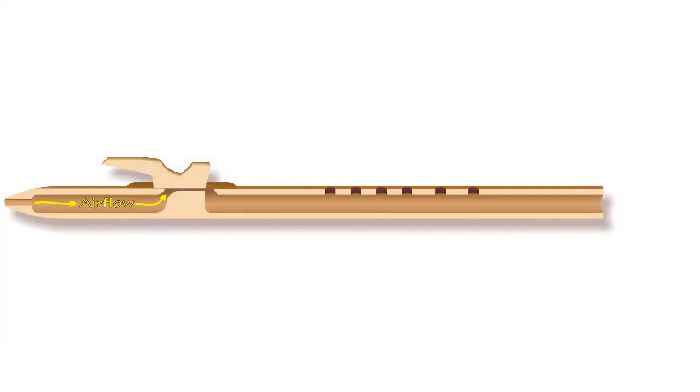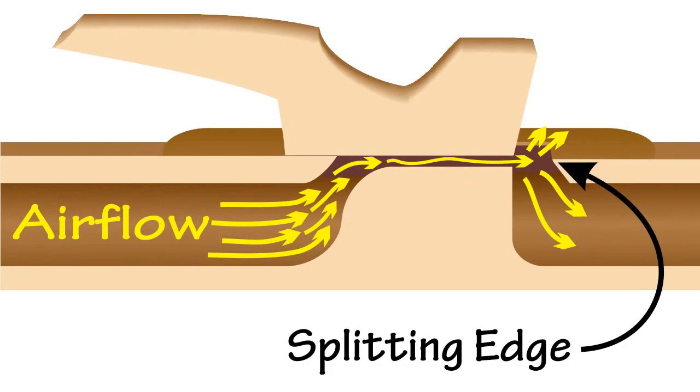Native American flutes are designed to get that oscillation to happen in a very controlled way. Our breath flows through the first cylinder and into the flue, the windway that sits under the block. The air then exits the flue and crosses the sound hole. We'll zoom in on the diagram to see the air hitting the sharp splitting edge. That's going to act like the edge of our dollar bill, and it's going to create an edge tone.